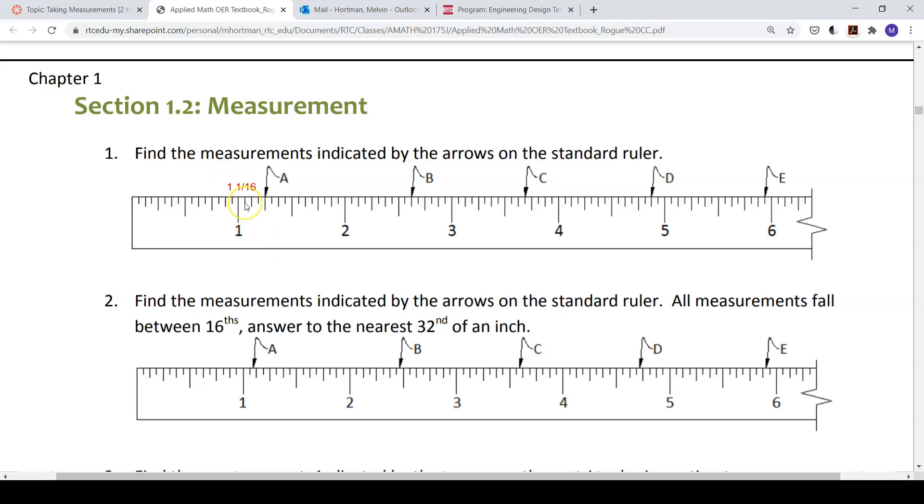1 inch, 1 and 1 16th, 1 and 1 eighth, 1 and 3 16ths, continuing through all the 16th increments in their simplified forms: 1 and 1 fourth, 1 and 5 16ths, 1 and 3 eighths, and so on, up to 1 and 15 16ths, and then finally 2 inches.